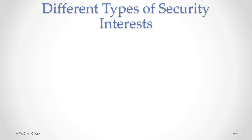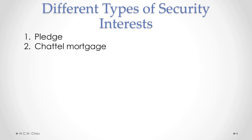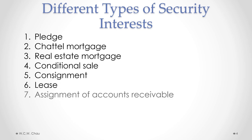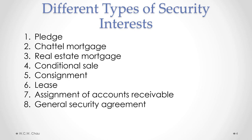There are many different ways of structuring a security interest in order to accommodate various legal, accounting, or practical business issues. We will look at nine different types: first, the pledge; chattel mortgage; a real estate mortgage; a conditional sale; a consignment; a lease; an assignment of accounts receivable; a general security agreement; and a Section 427 Bank Act security interest.